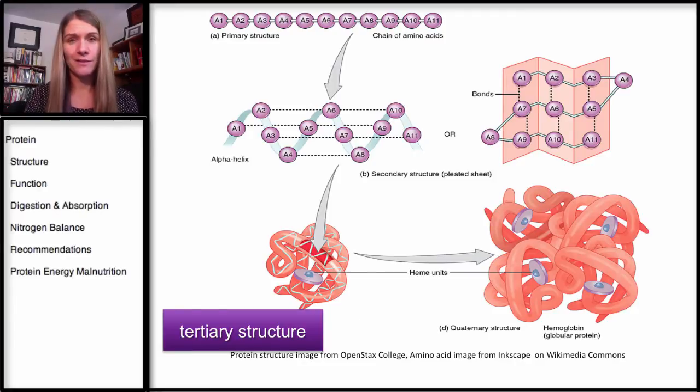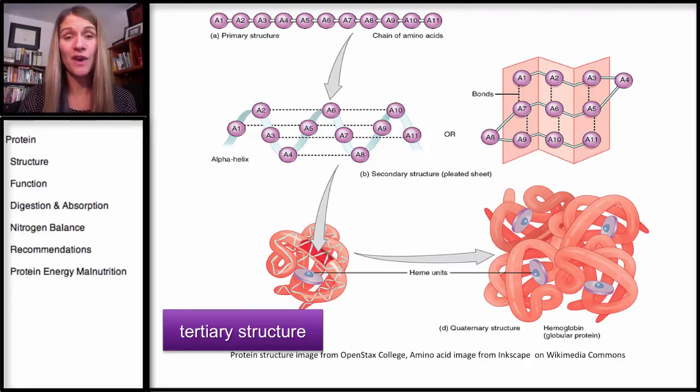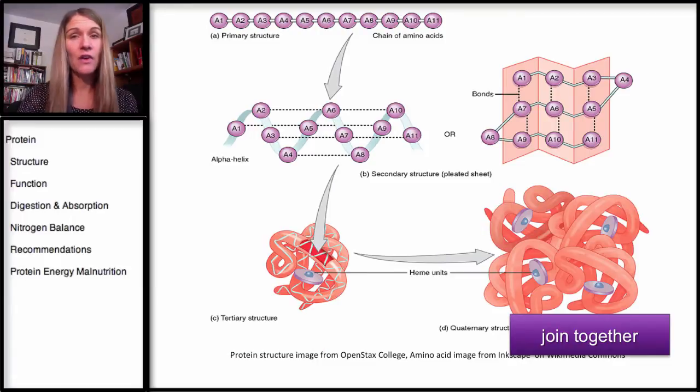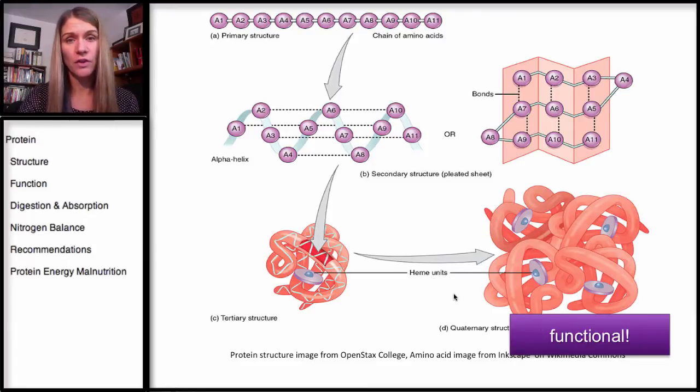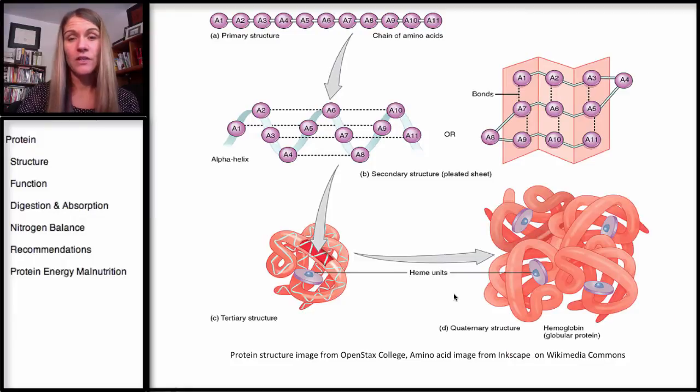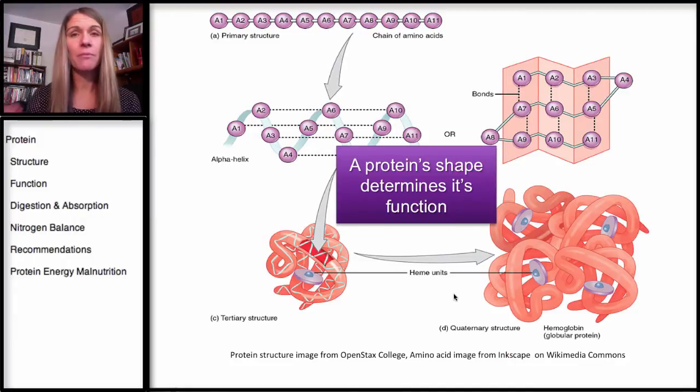At this point, the protein can become functional once it gets to this tertiary structure. But it more often functions as the quaternary structure, which is when these units here join together. And then this is generally our fully functional protein.